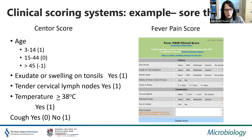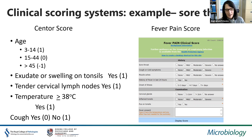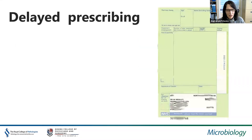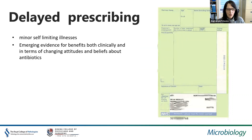Clinical scoring systems can guide antibiotic prescribing decisions. A good example is in sore throat, where most cases don't need antibiotics but streptococcal ones do. The Centor score and the FeverPAIN score are two evidence-based systems where examination findings, patient history, and basic observations like temperature generate a score that determines whether an antibiotic is needed.